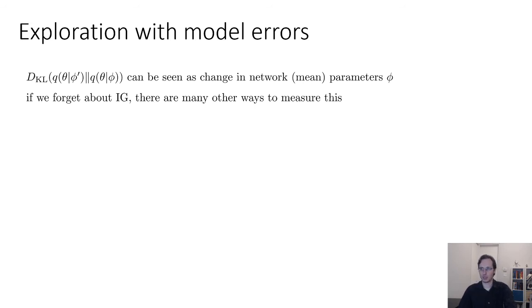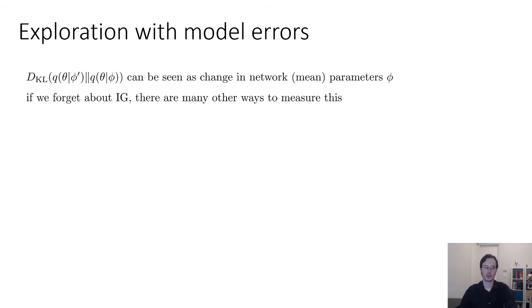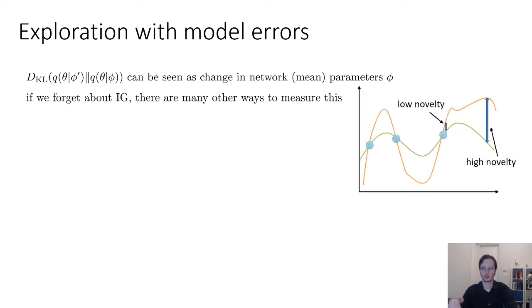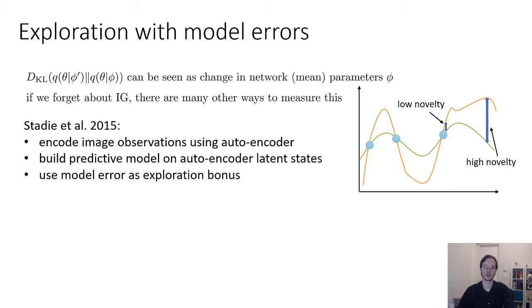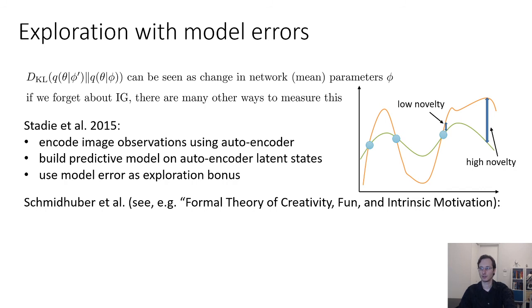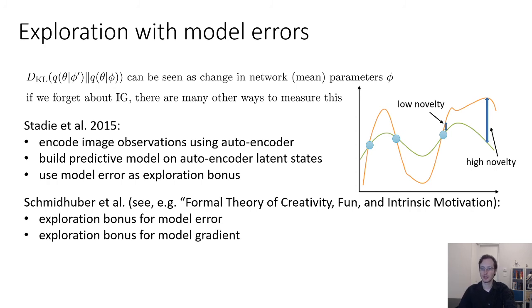While the KL divergence can be seen as a change in network mean parameters φ, if we forget about information gain, there are many other ways to measure how much your network is changing. We have this Bayesian method that estimates distributions over parameters and measures the change in the distribution as an exploration bonus. But if we just measure change in some parameter vector, we could essentially recover something similar to the error-based methods from before — for example, encoding image observations using an autoencoder, building a predictive model on the latent states, and using model error as the exploration bonus. This idea of using errors in models as exploration bonuses is a very heavily studied one.